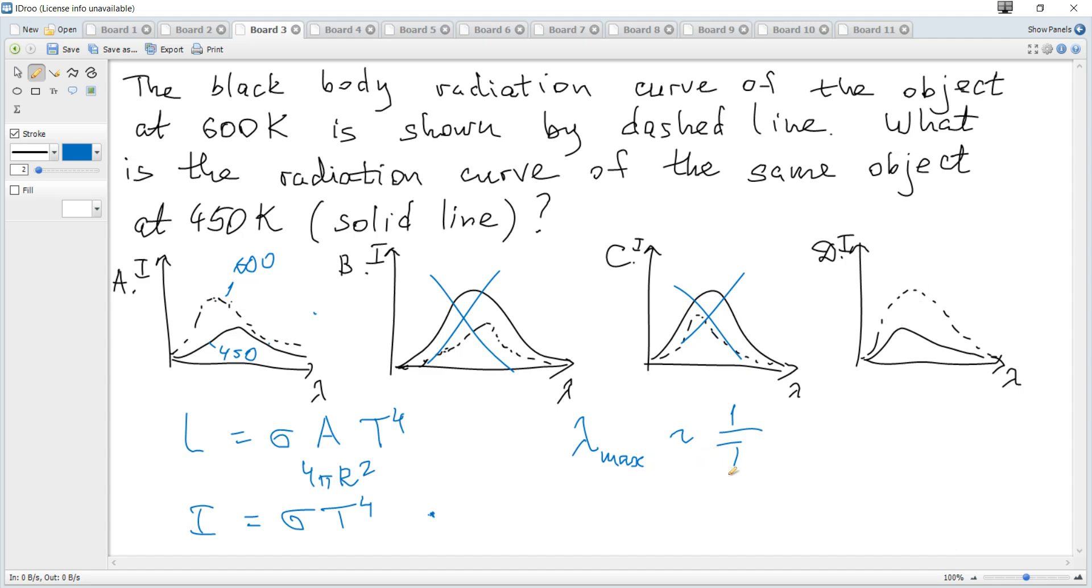According to this formula, since temperature becomes smaller for 450, if temperature decreases, lambda increases. So peak for 450 must be to the right, must be greater.